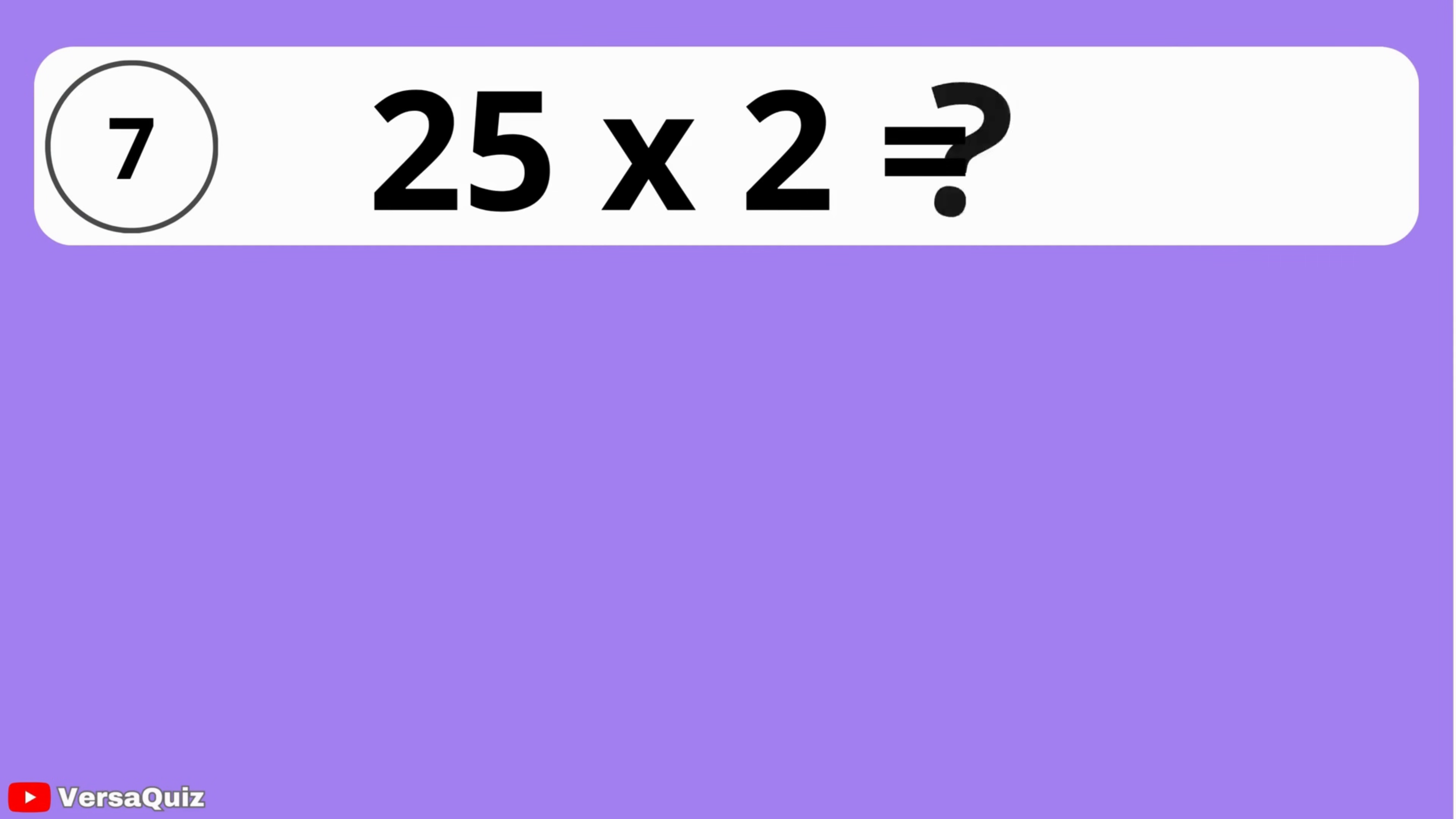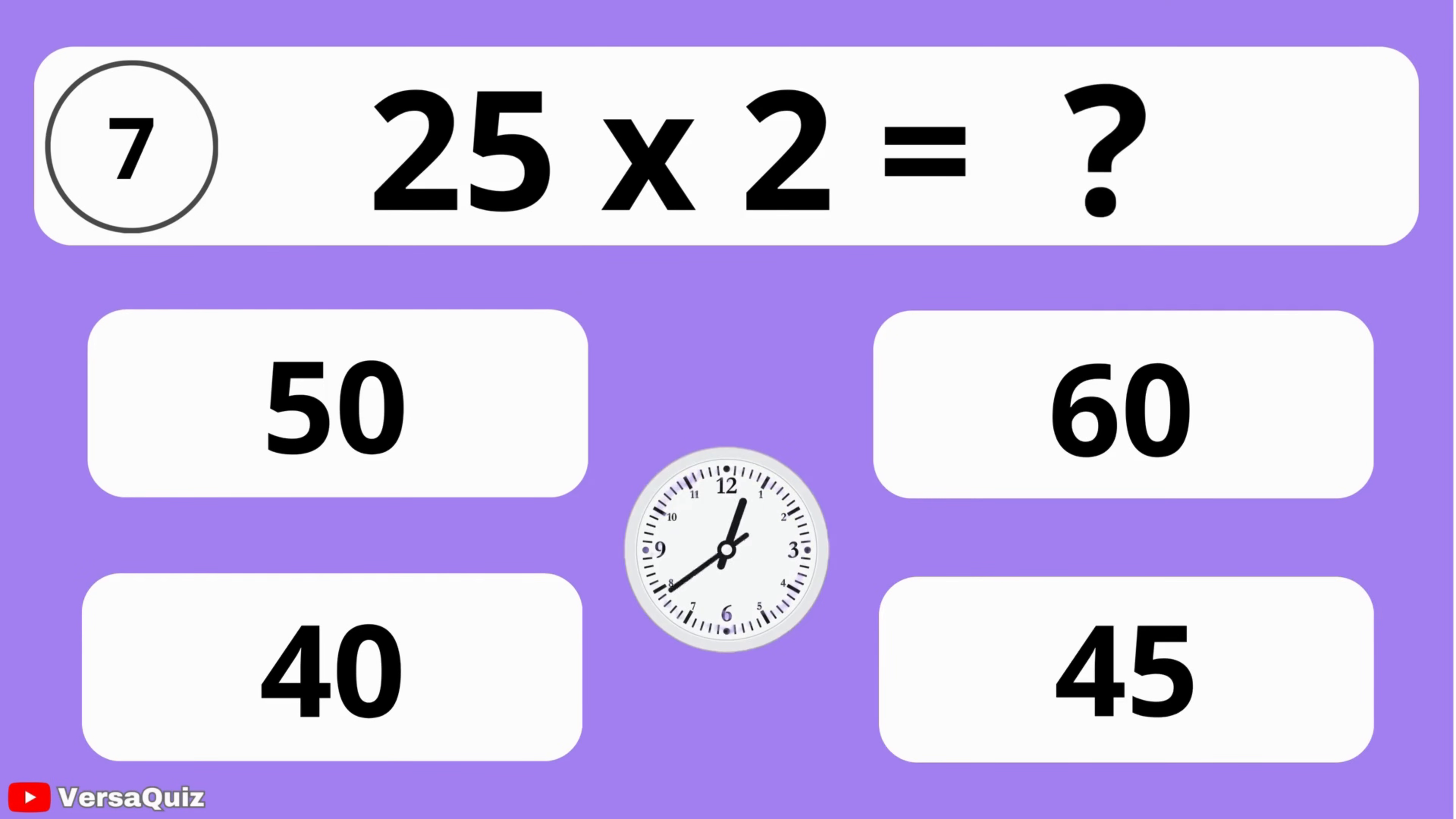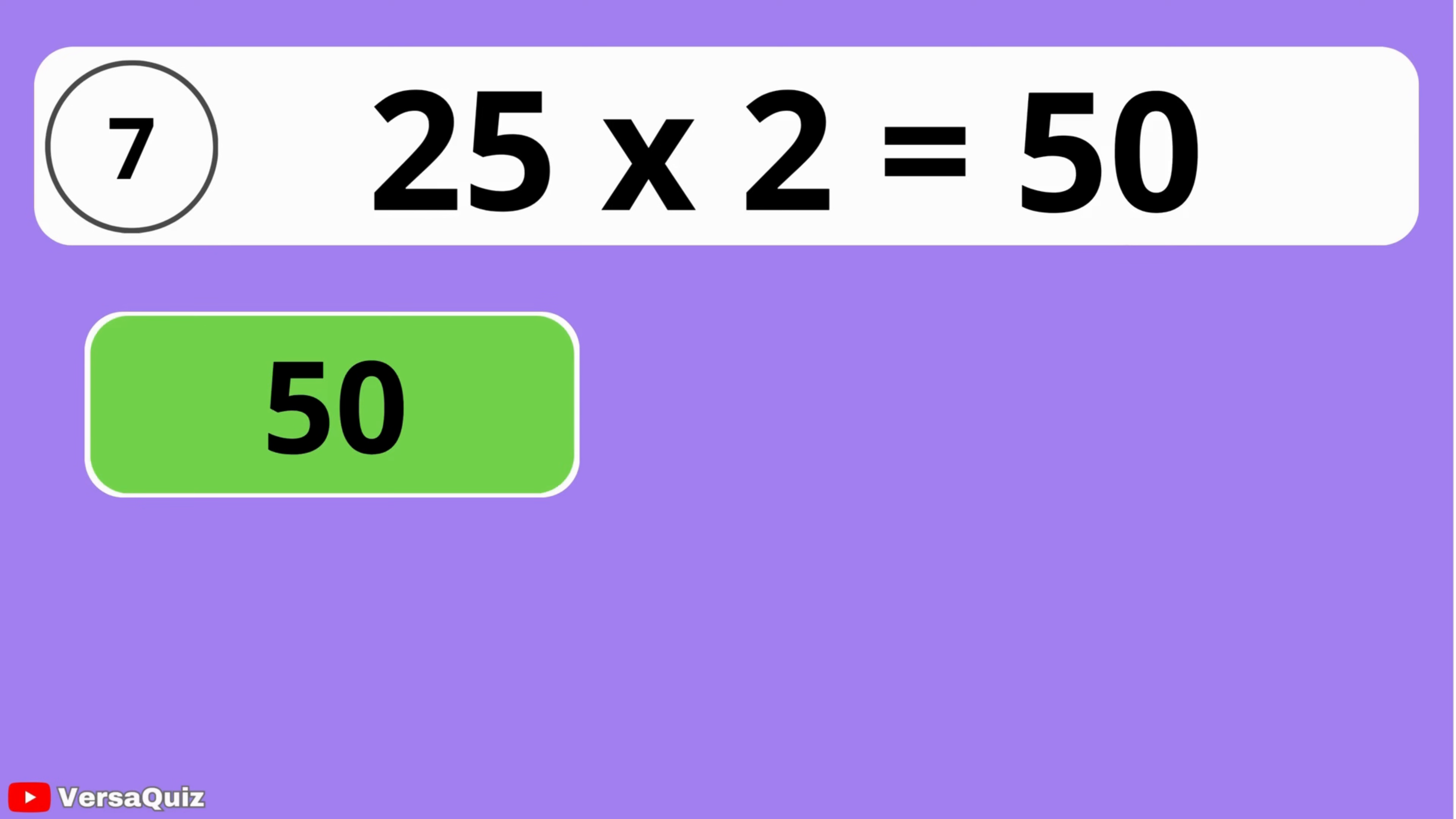What do you get when you multiply 25 by 2? 50, 60, 40, or 45? The answer is 50. When you multiply 25 by 2, you get 50.